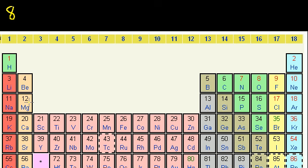A group of the periodic table is just a column of the periodic table. I'll start with this group because it's got a special name — this group right here is called the noble gases. What's common when you go down a group is that every element in a column has the same number of valence electrons, or the same number of electrons in its outermost shell.